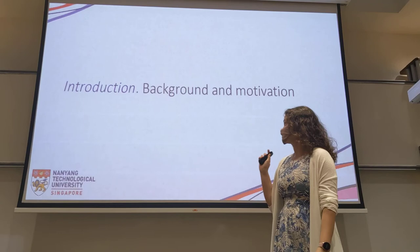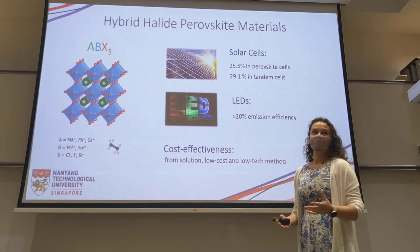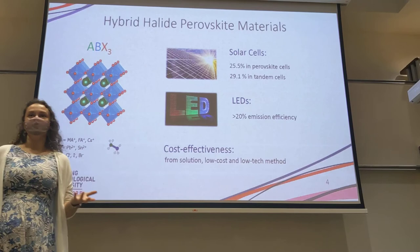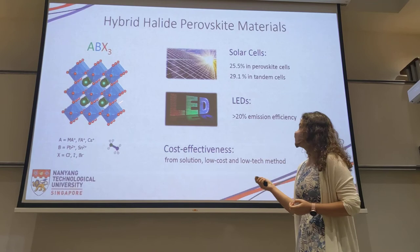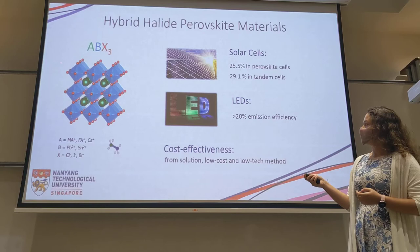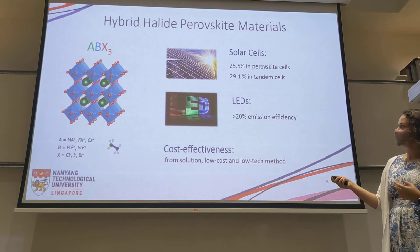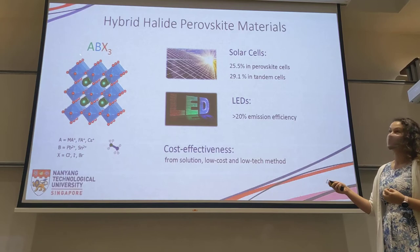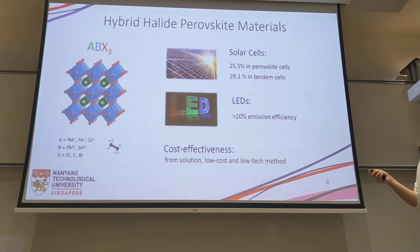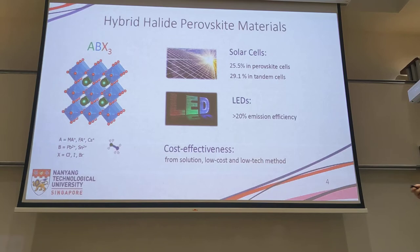In general, perovskites are named after a mineral, and there is a class of materials connected by their structure. The general formula is ABX3, where B is a small cation surrounded by six anions forming an octahedron connected by corners, and inside the cuboctahedral cavities there is a bigger cation A. To make halide perovskite, the anion should be a halide: chlorine, bromine, or iodine. Cation B is usually lead or tin, and to make it hybrid organic-inorganic, cation A should be an organic cation like methylammonium or formamidinium.